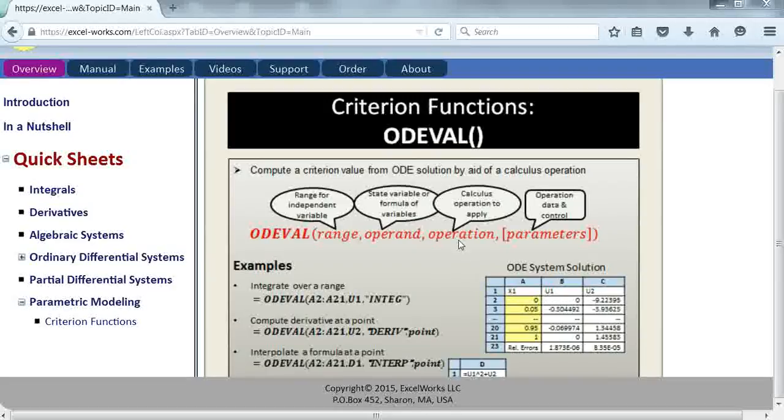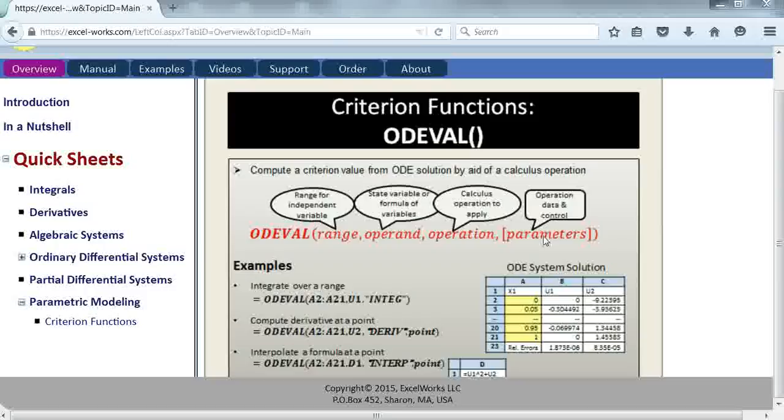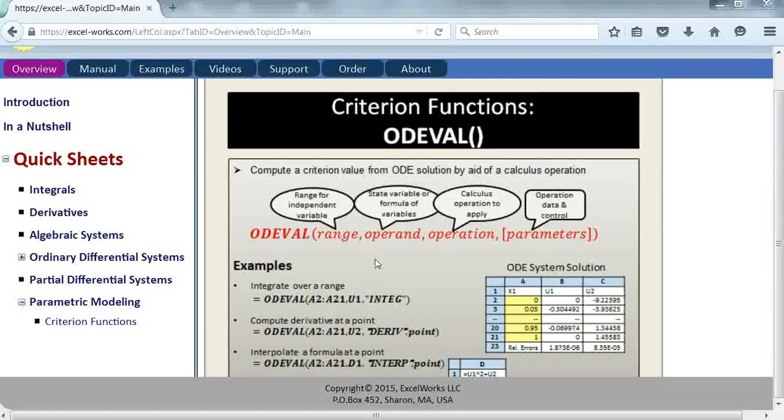The operation could be any of integration, differentiation, or interpolation. There are some optional parameters and some required parameters for the operation. For example, if you are interpolating, you would need to pass a point of interpolation. You can also pass optional parameters to control the algorithm. This is all described in detail in the help page for ODEval that you can access from the website.